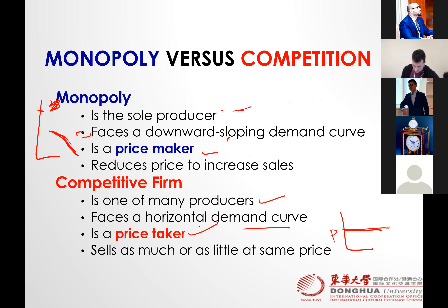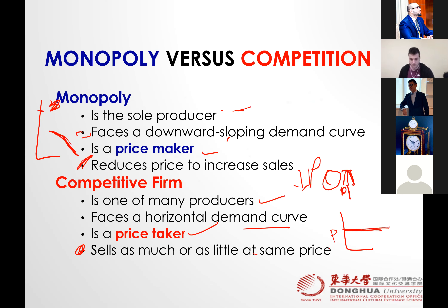To increase sales, monopoly reduces its price so that the law of demand activates and sales go up. Whereas competitive firms cannot reduce the price because price is the same for everyone — nobody controls it. They rely on the market and on the number of customers. If more customers come to the shop, sales increase; otherwise it depends on customers because there is no uniqueness in the product — products are largely the same.